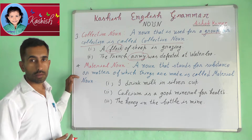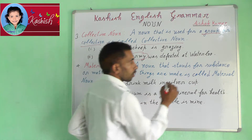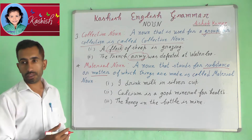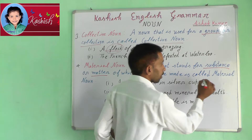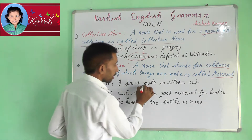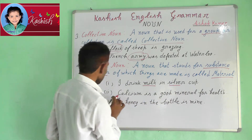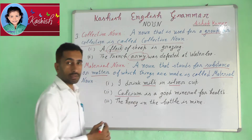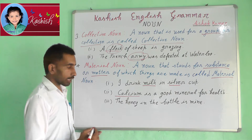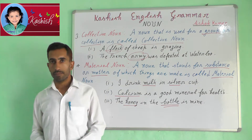Fourth, Material Noun. A noun that stands for a substance or matter of which things are made is called a Material Noun. For example, I drink milk in a silver cup. Calcium is a good mineral for health. The honey in the bottle is mine.